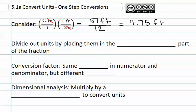In this way, we can convert units. We had 57 inches and we wanted to know how many feet that would be. We used what's called a conversion factor in which the top and the bottom are equal. We will divide out units by placing them in the opposite part of the fraction. This means diagonally.